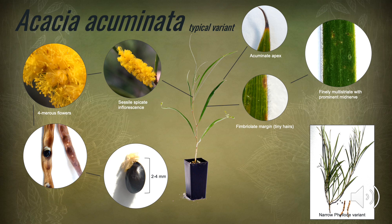Spicate inflorescences, or spike-shaped clusters of flowers, emerge from the phylode axil, featuring many tiny golden-yellow tetramerous flowers, meaning each flower contains four sepals and petals. Pollinated flowers produce flat brown pods, or legumes, between 3 and 8 centimetres in length, containing elliptic to ovate black-brown seeds between 2 and 4 millimetres.